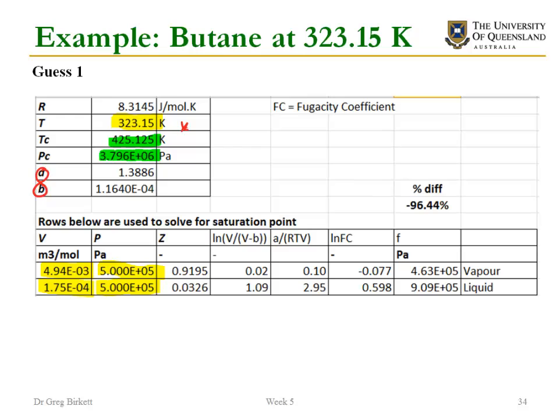Now that I've got all these things I can calculate my compressibility. So of course I would expect that the compressibility or Z of my liquid phase is smaller than my gas phase and that's what I've got here. And then I'm just calculating the bits of the equation that I use to calculate the fugacity coefficient. So FC is just a fugacity coefficient here and then once I've got my fugacity coefficient I can calculate my fugacity.